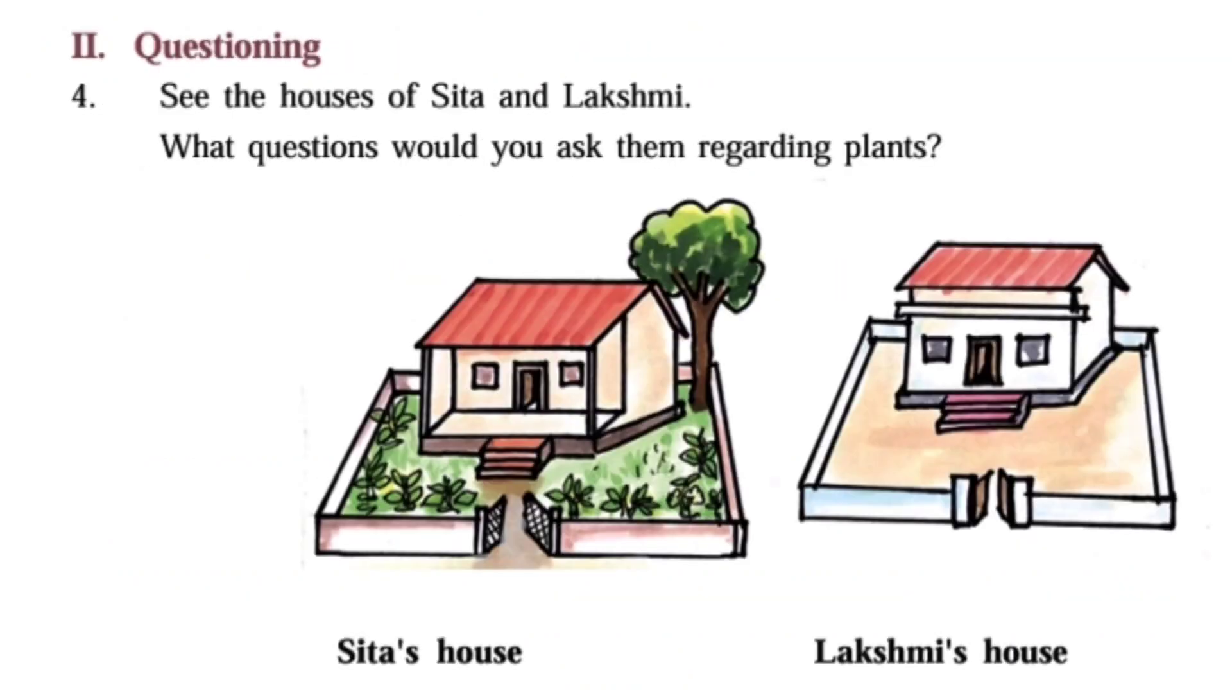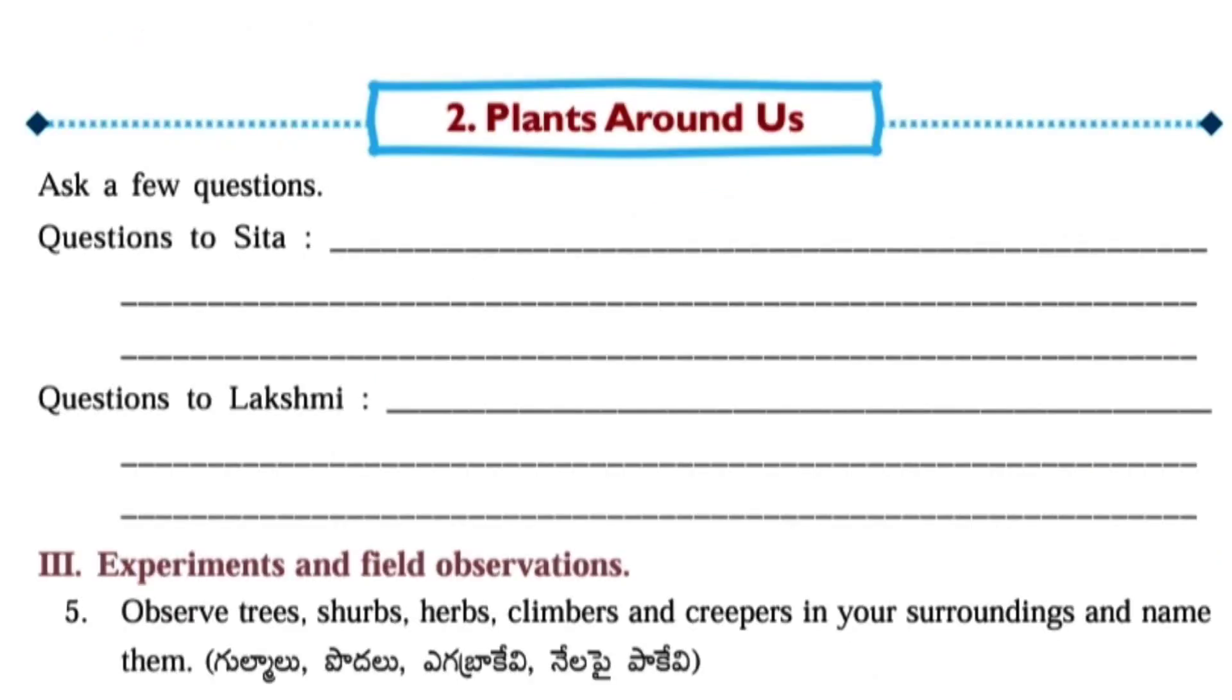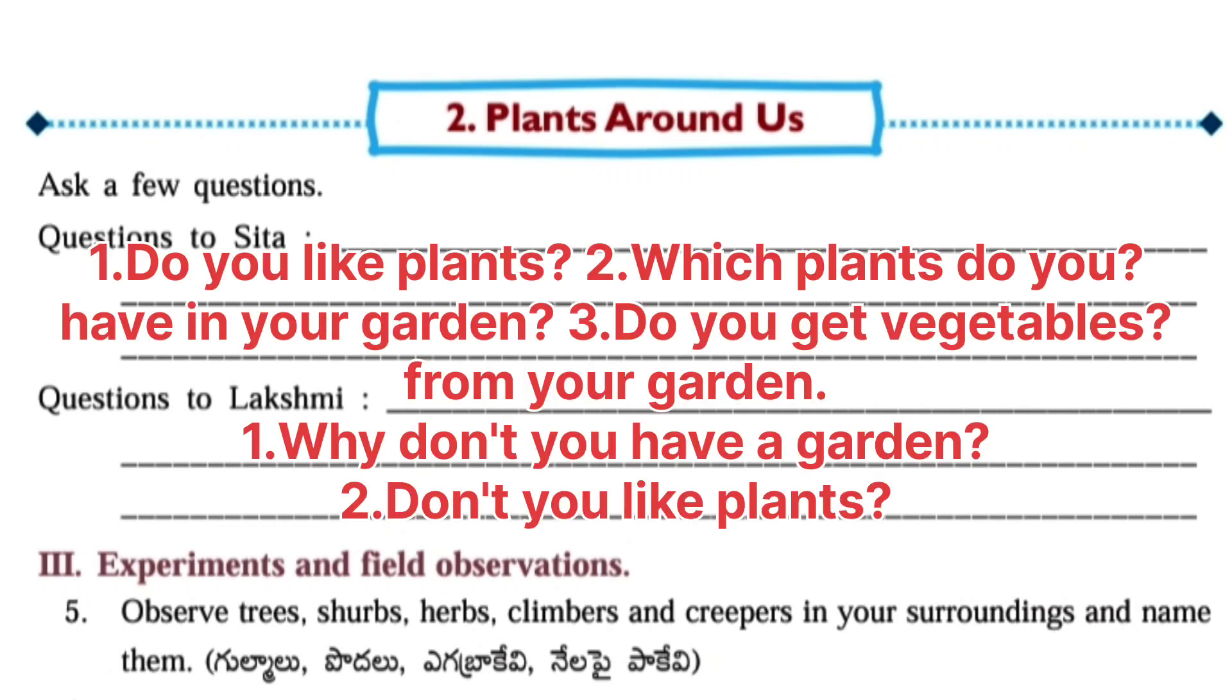And next one: Questioning. Sita and Lakshmi's houses. What questions would you ask them regarding plants? Here two houses are given, first one Sita's and second one Lakshmi's. Now we have to ask some questions regarding their houses. Ask a few questions to Sita: Do you like plants? Which plants do you have in your garden? Do you get vegetables from your garden? Next question is to Lakshmi: Why don't you have a garden? Don't you like plants?